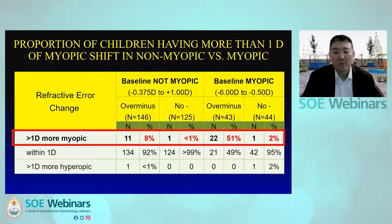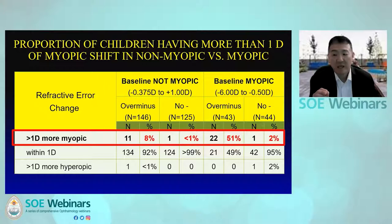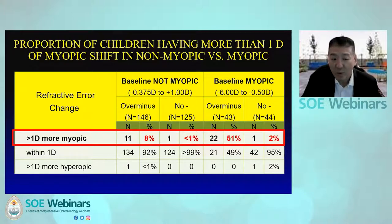For children who were not myopic at baseline, there was a 0.23 diopter myopic shift in the over-minus group with no shift in the non-over-minus group — a much smaller difference. Looking at the proportion with more than 1 diopter of myopic shift: for non-myopic children at baseline, it was 8% for the over-minus group versus less than 1% for the non-over-minus group. For children who were myopic at baseline from -6 to -0.5 diopters, it was 51% for the over-minus group compared to only 2% in the non-over-minus group — a 22-fold increase. A striking difference.